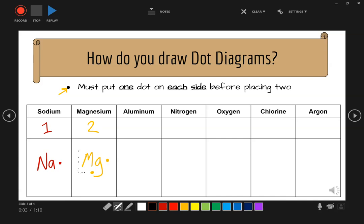So every time you have one, imagine an imaginary box around your element, and you're always placing the dots on the sides of the box.